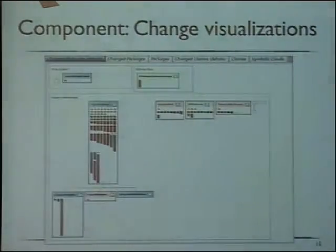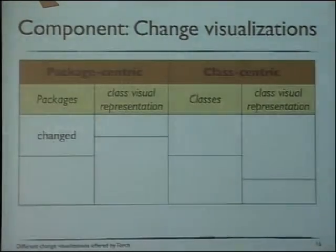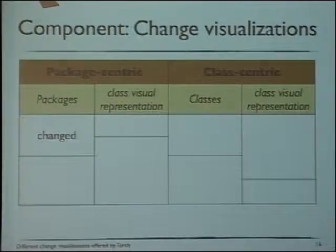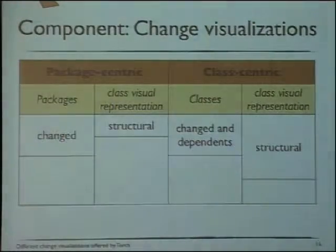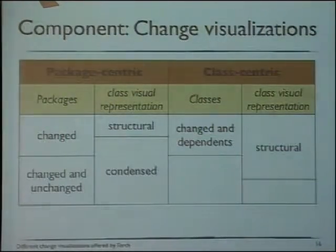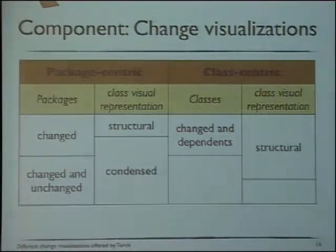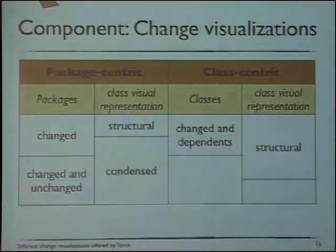In general, this set of visualizations can be summarized as package-centric visualization, class-centric visualization, and symbolic cloud. We have classes mapped with their respective packages, a structural representation where you see the variables and methods, or a condensed view to simplify — because depending on the versions you're comparing, you can have a big dashboard. You can have changed packages with structural or condensed view, or the whole packages with a condensed view.